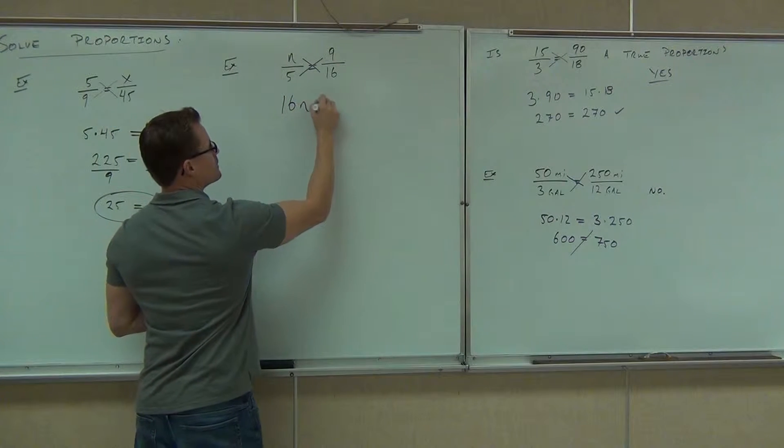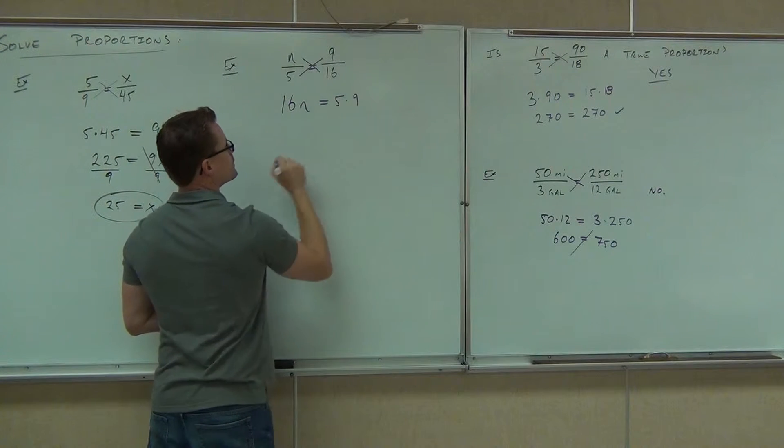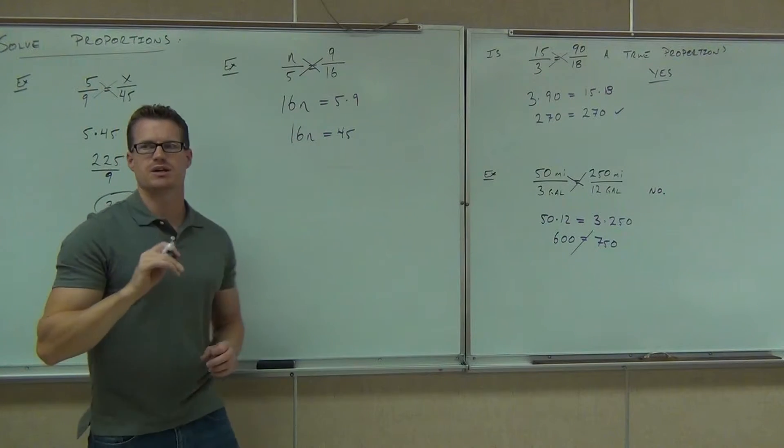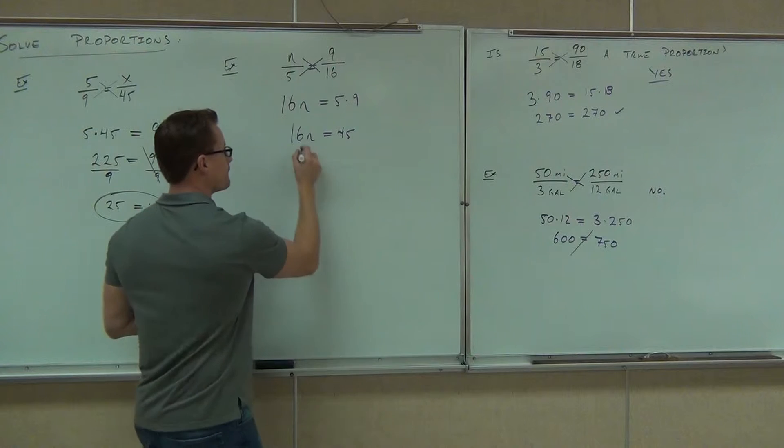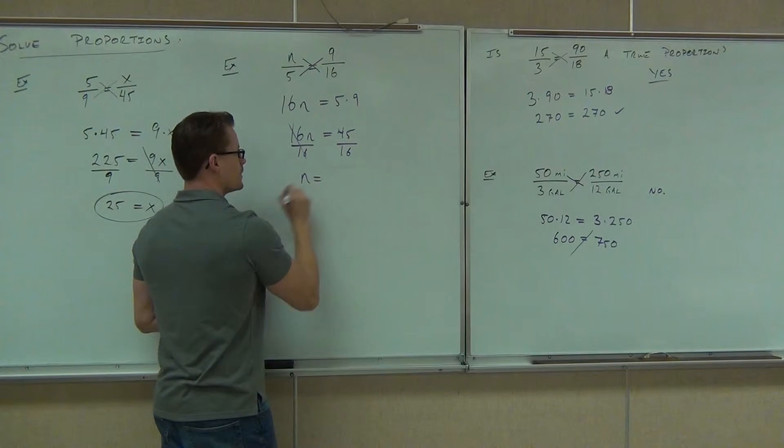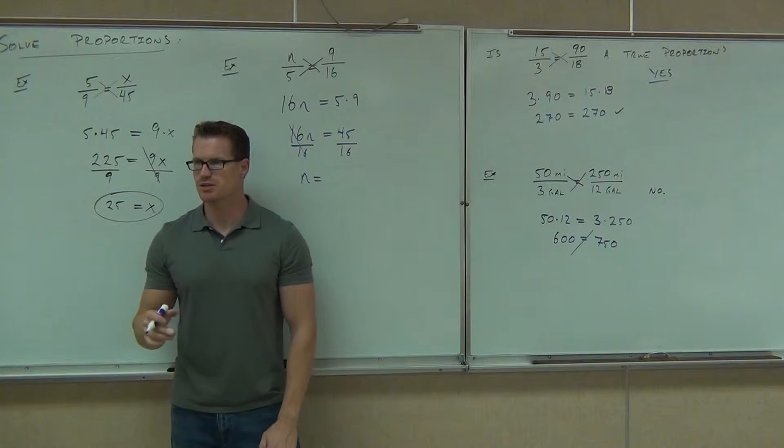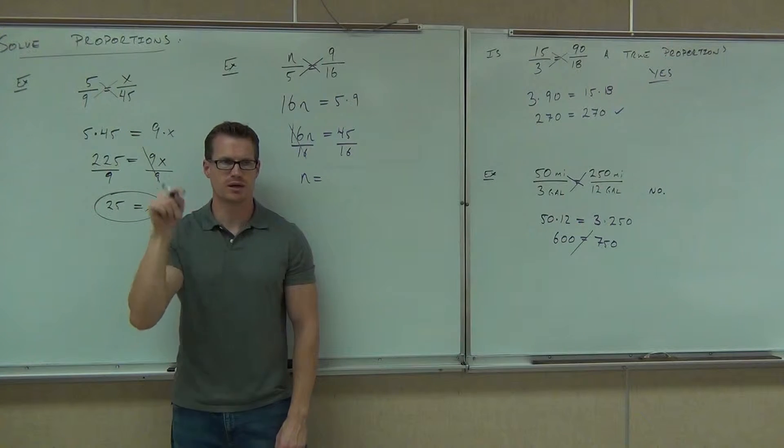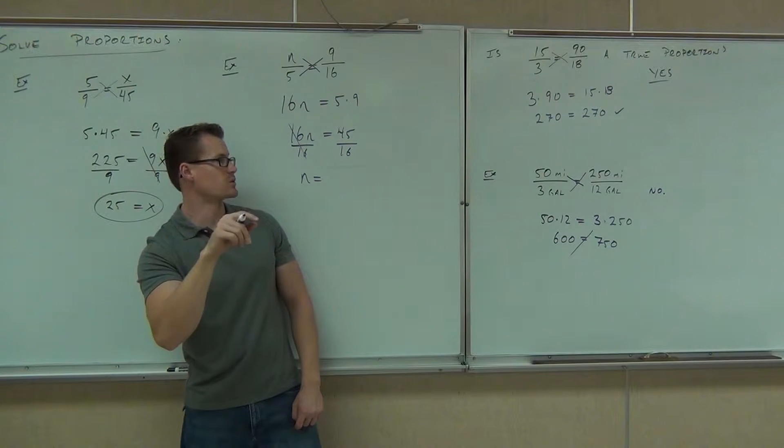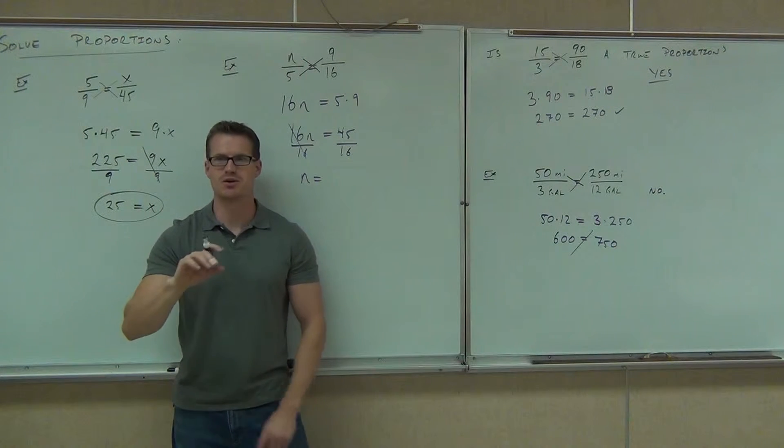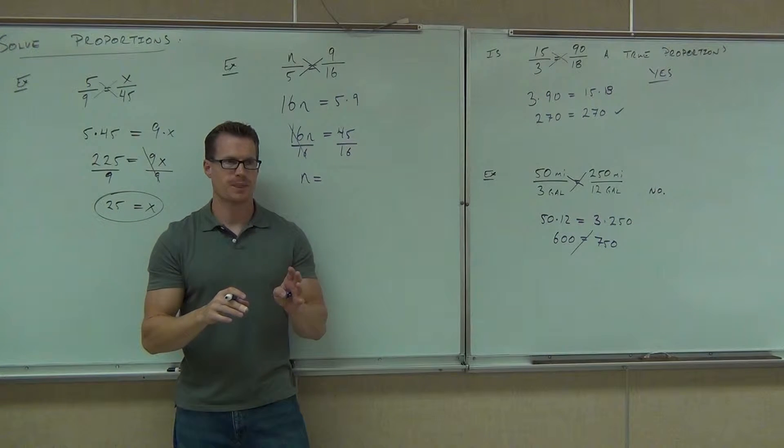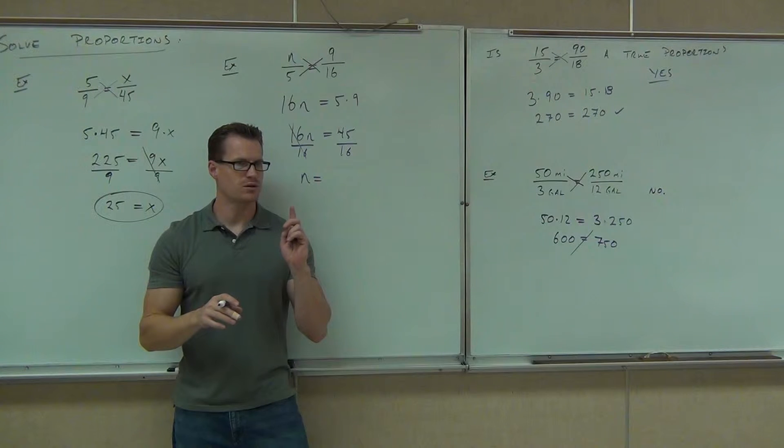Hopefully, we'll get 16n equals 5 times 9 or 16n equals 45. Let's get rid of the 16. What do you do? Divided by... Now, wait a second. 45 isn't divisible by 16. So, when you punch in your calculator, you should be doing 16 divided by... I'm sorry. I said that backwards. 45 divided by... Yeah, don't do it the other way. That would be wrong. So, 45 divided by 16, yes? Can you simplify that fraction? No.